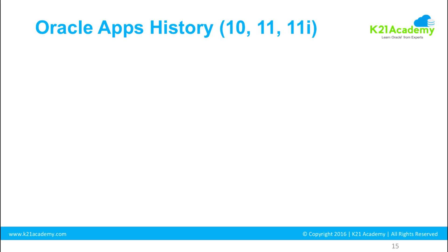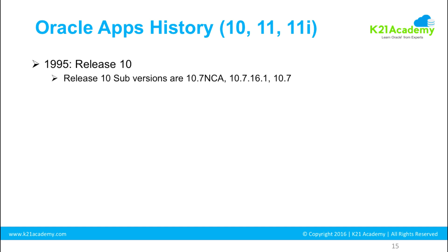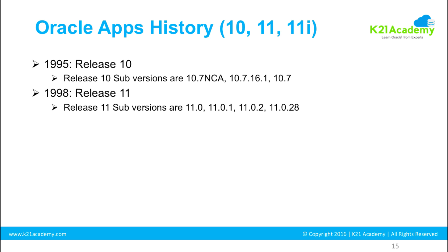Release 10 came next, and version 10.7 was the first normal character-based forms release. Then in 1998, release 11 was introduced as versions 11.0 and 11.1. Then in 1999, version 11.03 came, which the instructor supported in his early days with a customer. You'll rarely find anyone still using version 11.03 today.